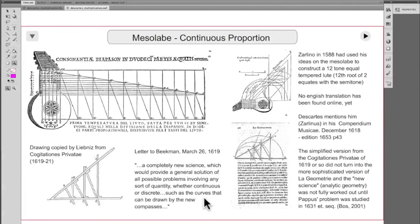Beekman was a likely source of Descartes' ideas. He had written a compendium musica for Beekman in 1618. Shortly thereafter, he drew his first version of the compass, and he wrote to Beekman that he had found a completely new science. Apparently this was not worked out for some time, according to Boss.